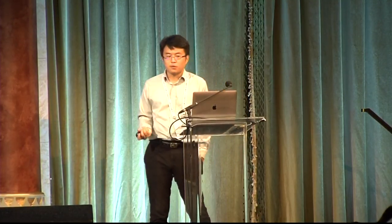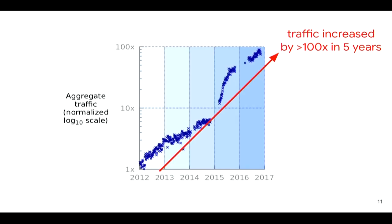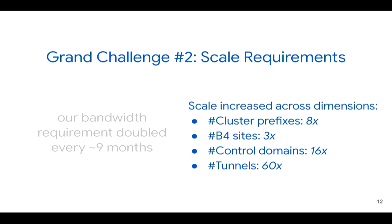Scaling is another grand challenge we have faced in B4. Our bandwidth requirement has doubled pretty much every nine months, and we have seen this trend consistently since the inception of B4. We have seen an incredible 100x increase in aggregate traffic demand over the last five years. We also had scaling challenges over multiple other dimensions, such as number of cluster prefixes, number of B4 sites, control demand, and number of tunnels. As we connect more and more clusters to B4, we have scaling challenges in all dimensions.